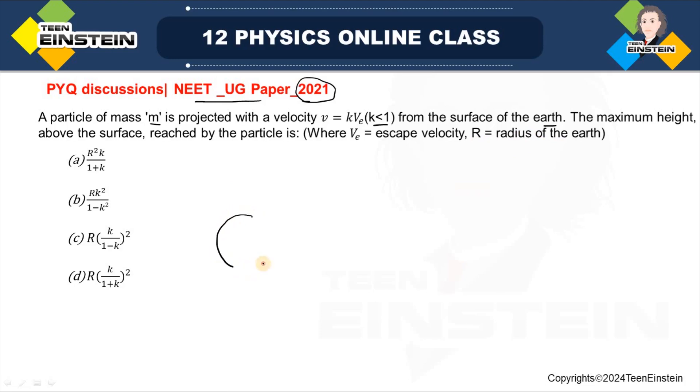So, according to the question, suppose this is the Earth of radius capital R and a particle of mass small m is given certain initial velocity that is K into VE, and with that it is projected vertically.